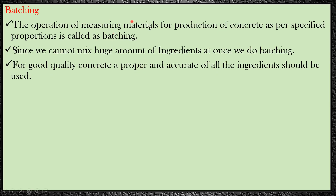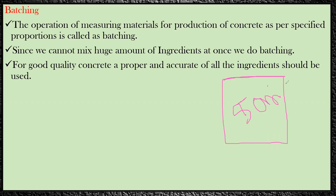In this lecture we will see what is batching and what are the different types of batching. The operation of measuring the materials for the production of concrete as per the specified proportion is called batching. Since we cannot mix huge amounts of ingredients at once, we have to do batching. For example, if I want to construct a slab requiring 50 cubic meters of concrete, I cannot prepare all of it at once.